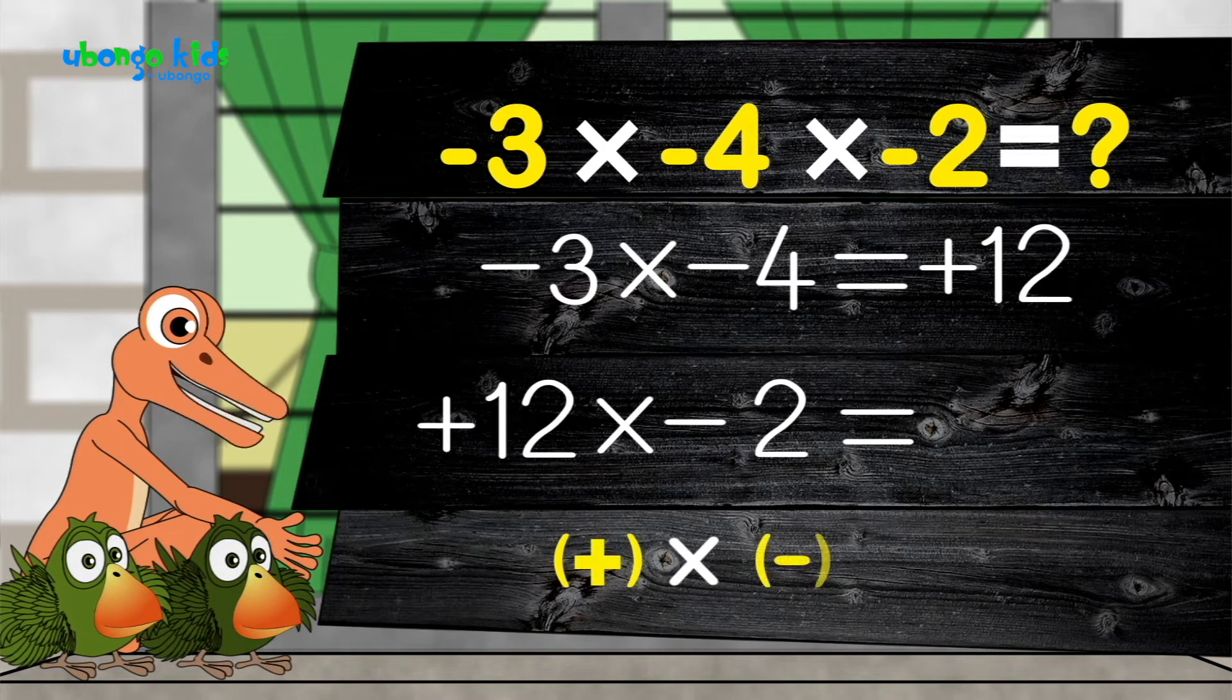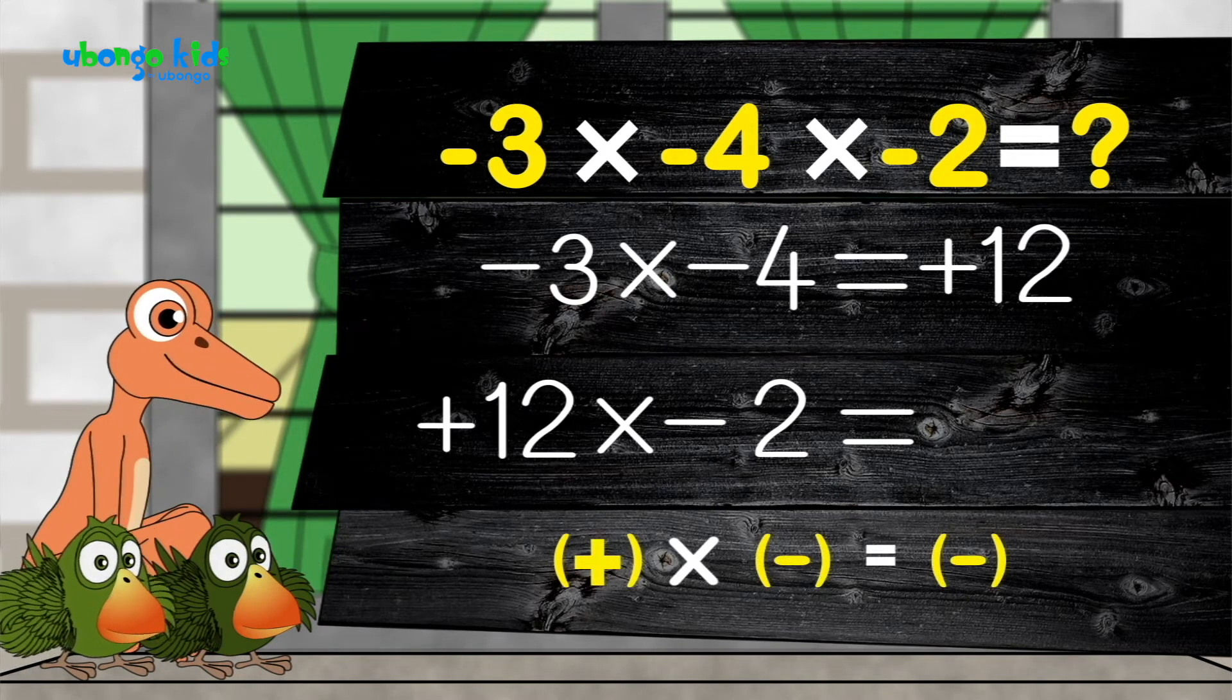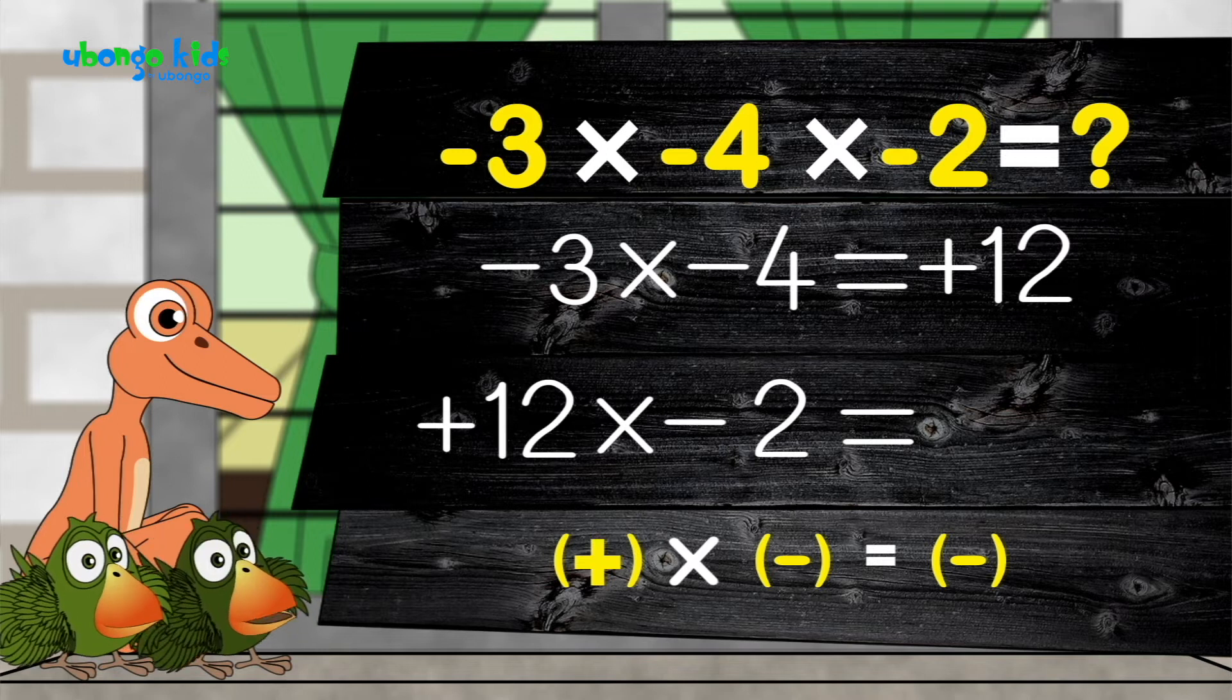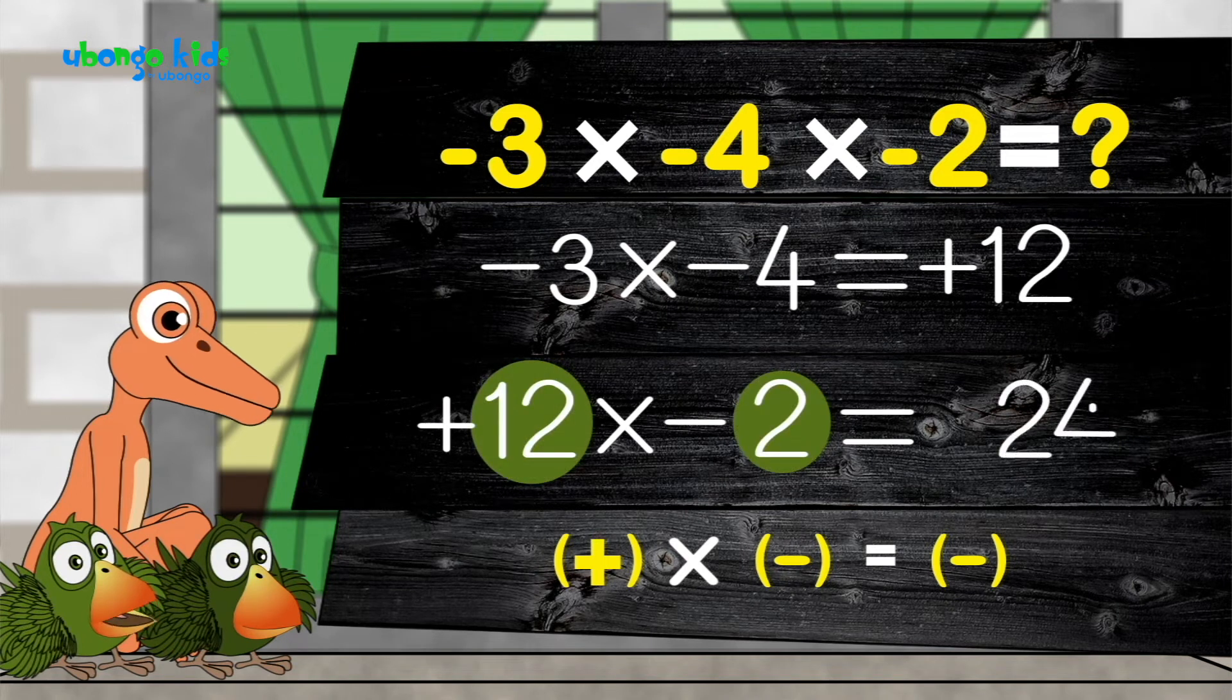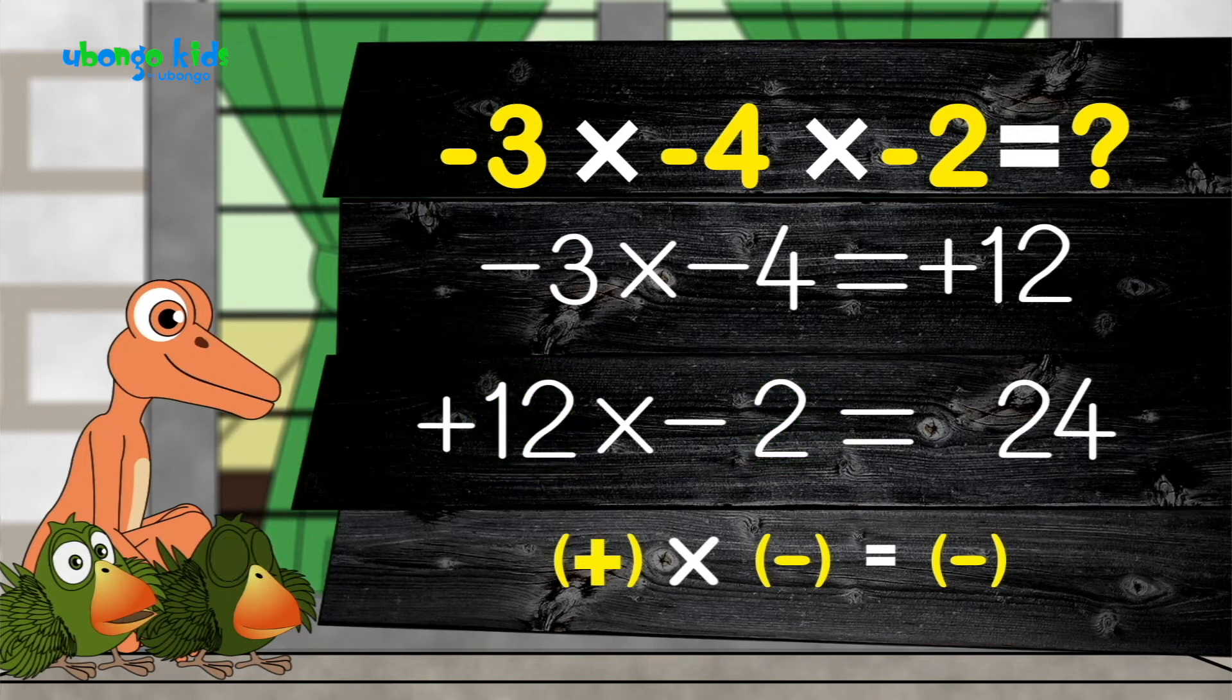Positive times negative is negative. Positive times negative is negative. And twelve times two is twenty-four. So, the answer is negative twenty-four.